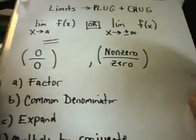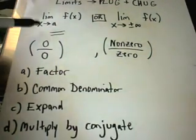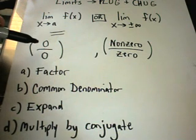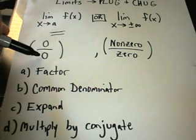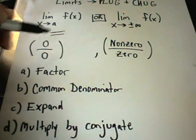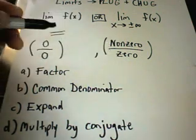Typically, most limit problems don't work out as easy as this, though. Typically, when you plug in x equals the number into your function, you'll usually either get something of the form 0 on top and 0 on the bottom. This is definitely not 1. Or you get something non-0 over 0.